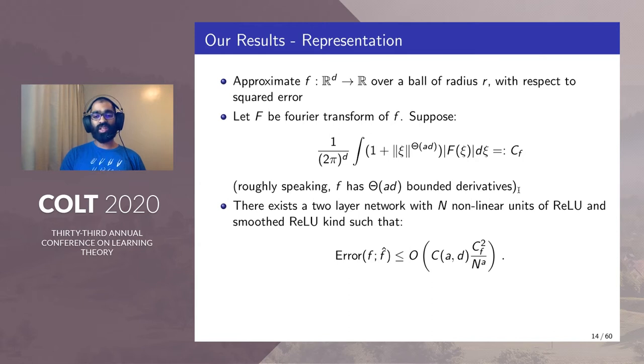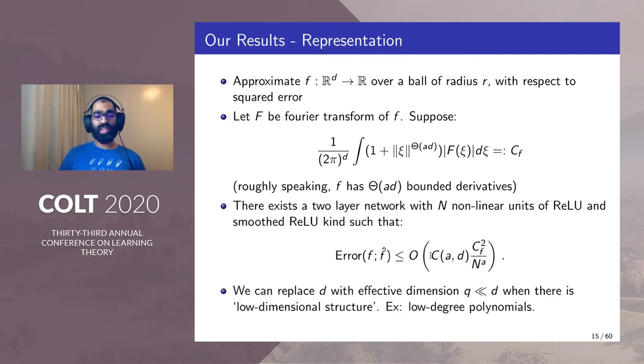The c(a·d) factor here indeed is dimension dependent and quite bad. But the silver lining is that we can replace d with effective dimension q, which could be much smaller than d whenever there is a low dimensional structure.